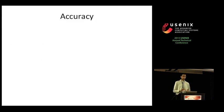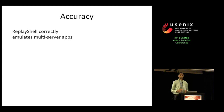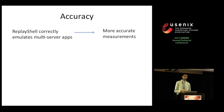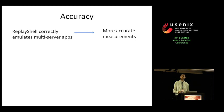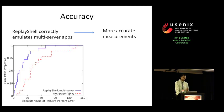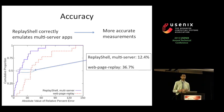For accuracy, replay shell correctly emulates the multi-server nature of a recorded application, and we found this leads to more accurate measurements. To evaluate this, we loaded 20 of the Alexa top 100 web pages over the internet over a 5 Mbps link with 100 millisecond minimum RTT. We then loaded recorded versions locally over the same emulated network conditions using replay shell and Google's WebPageReplay, which uses a single server. Here we plot the CDF of the relative percent error compared to internet measurements. At the median, page load times within replay shell are much closer to those collected on the internet.